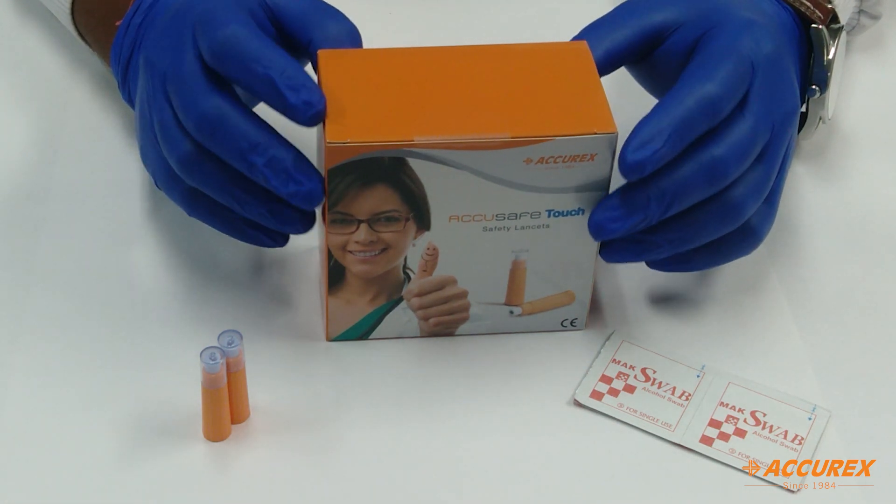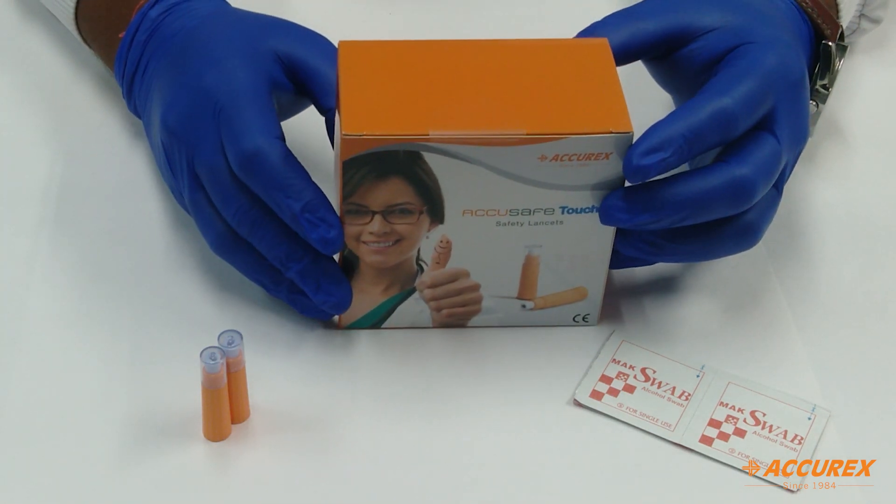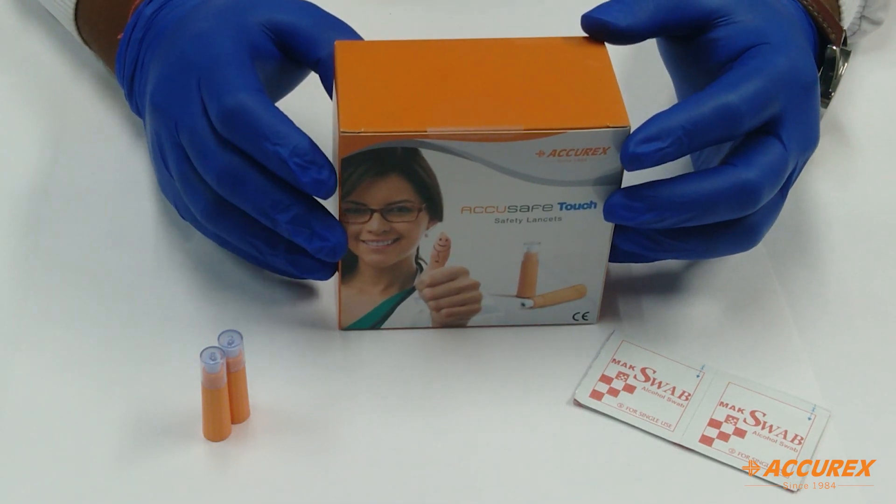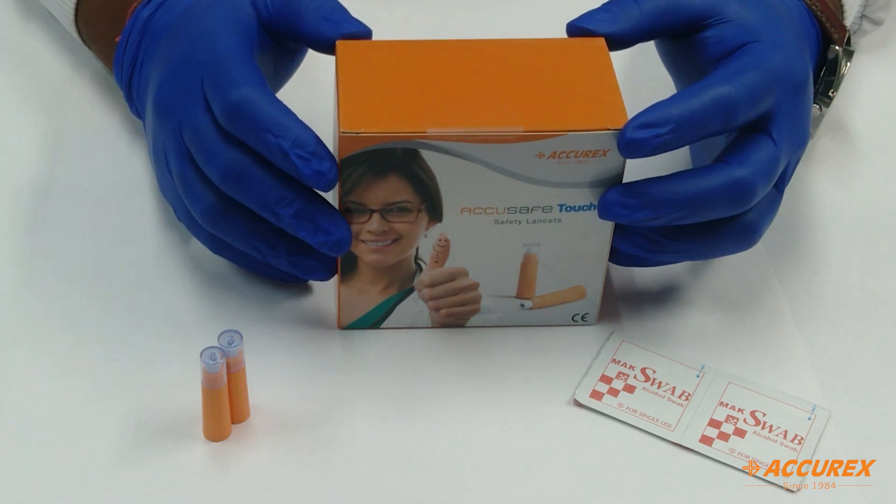This box contains 100 lancets. What is the use of lancet? The lancet is used for pricking the skin and to collect a small amount of blood for testing of POC product.